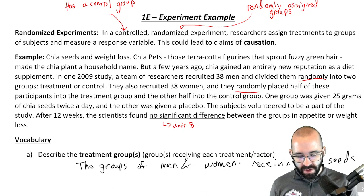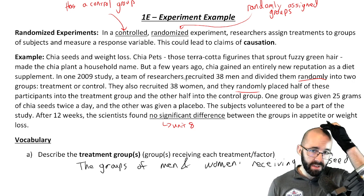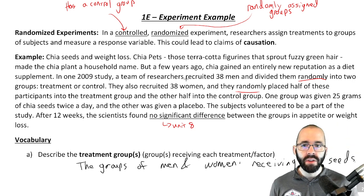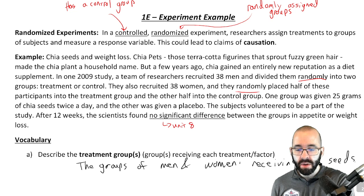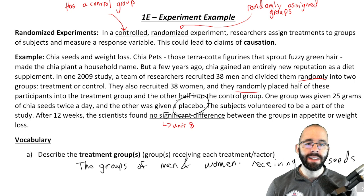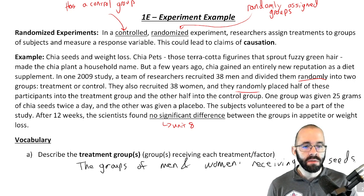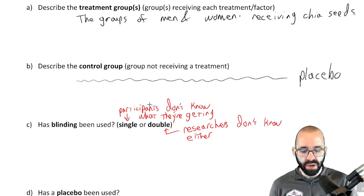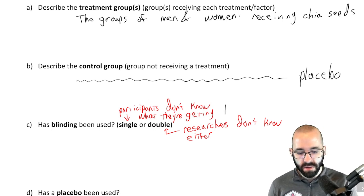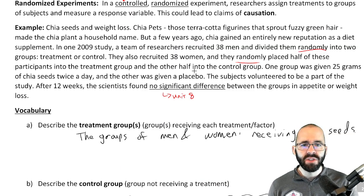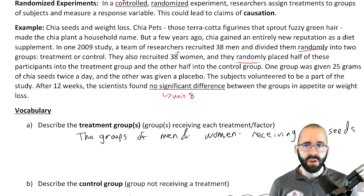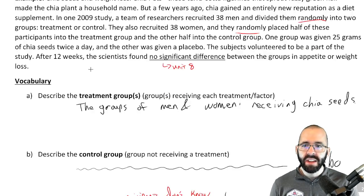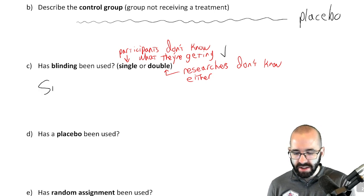We do know whether the participants know, because they're given a placebo. If you're given a placebo, usually about 90-something percent of the time that means you don't know whether you're getting the treatment or not. So it's definitely at least single blind — the participants don't know. As for the researchers, the study doesn't say whether they know or not, so we'll assume they do know, making this single blind.